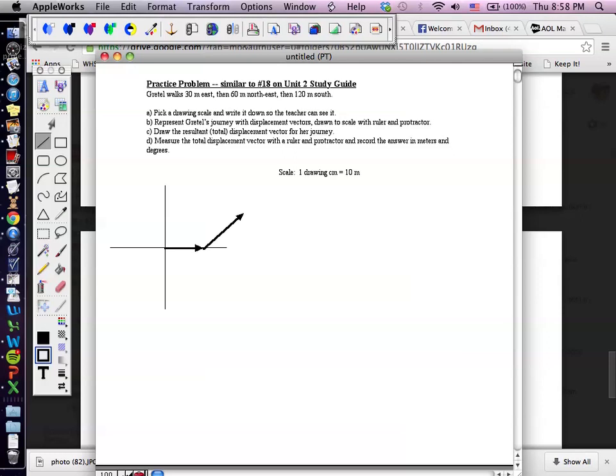From there, Gretel turns south for 120 meters. That's 12 centimeters, which will be twice the length of this vector. With a ruler, you would draw 12 centimeters. And it looks something, I'm guessing, about like that.